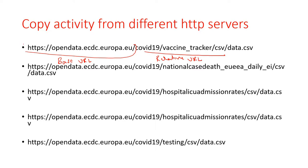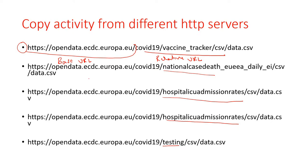I have different files from different websites. The first one is vaccine tracker, the second is national cases and dates, then hospital admission rates, one more hospital admission rates file, and a testing file. I have multiple files and I need to copy all of them at a time from my HTTP server to Azure Data Lake.